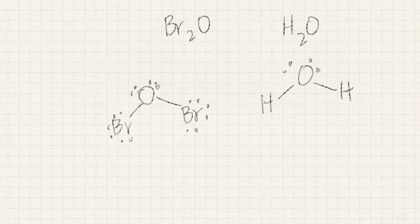Oxygen has one, two, three, four, five, six valence electrons. And all three atoms have full octet.